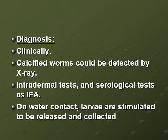Diagnosis is usually clinical, by finding the blister or the track of the adult worm under the skin. Calcified worms, after they die, can be detected by X-ray wherever they are. Intradermal tests and serological tests, such as indirect fluorescent antibody tests, can also be done. On water contact with the blister, the larvae are stimulated to be released and can be easily collected and examined under the microscope.